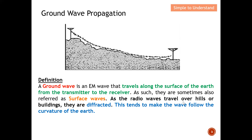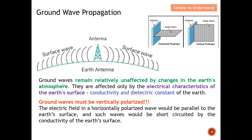As radio waves travel over hills or buildings, they are deflected. This tends to make the wave follow the curvature of the earth, so the surface wave or ground wave actually follows the contour of the earth from the transmitter to the receiver.